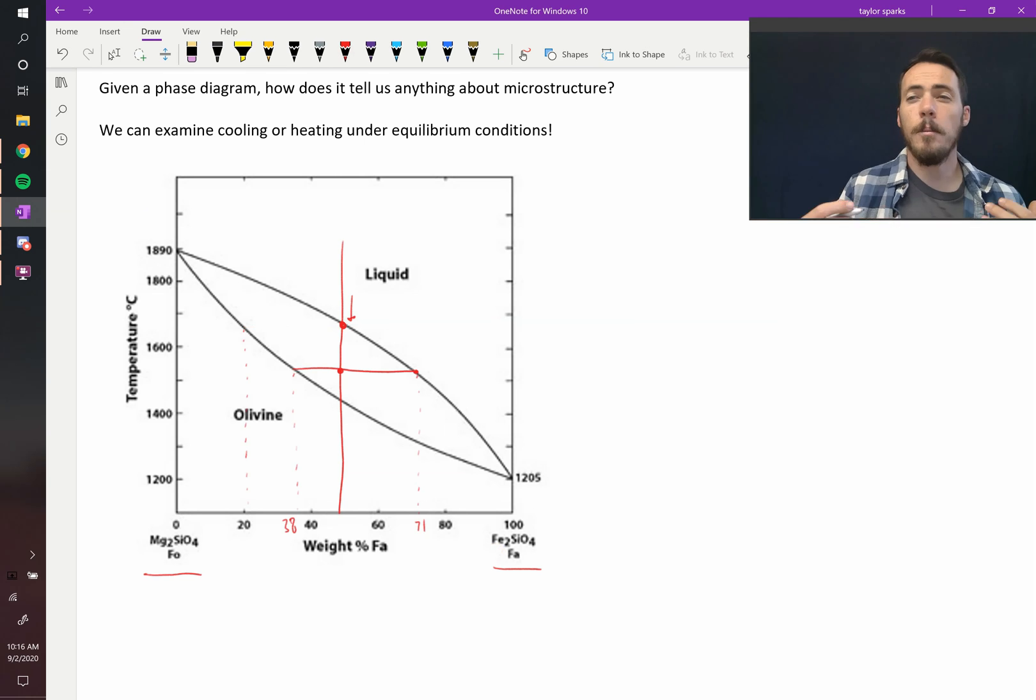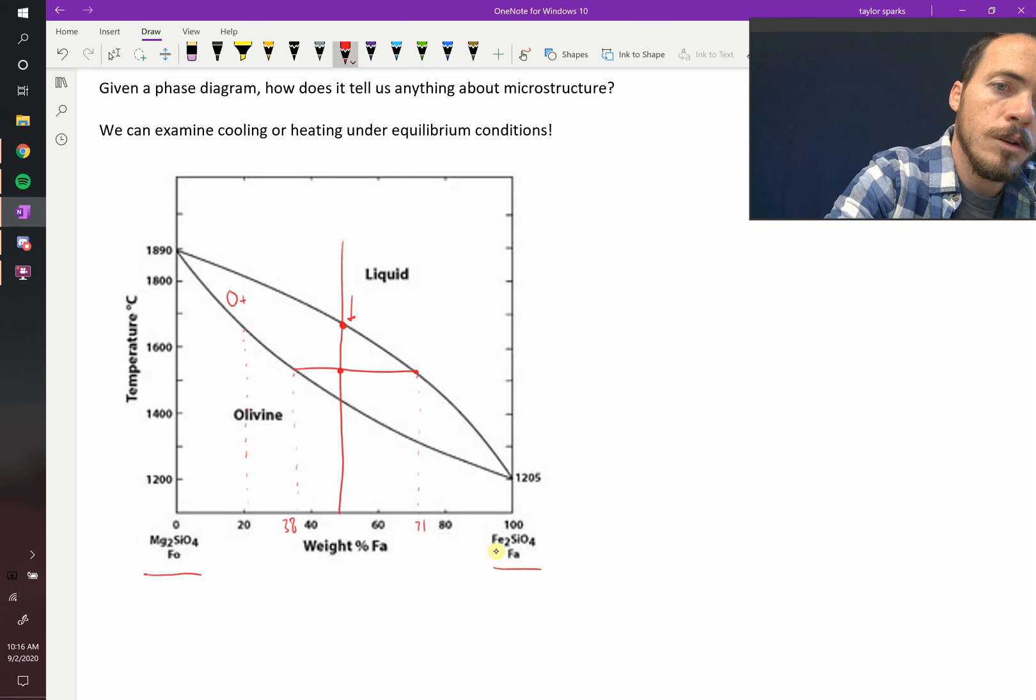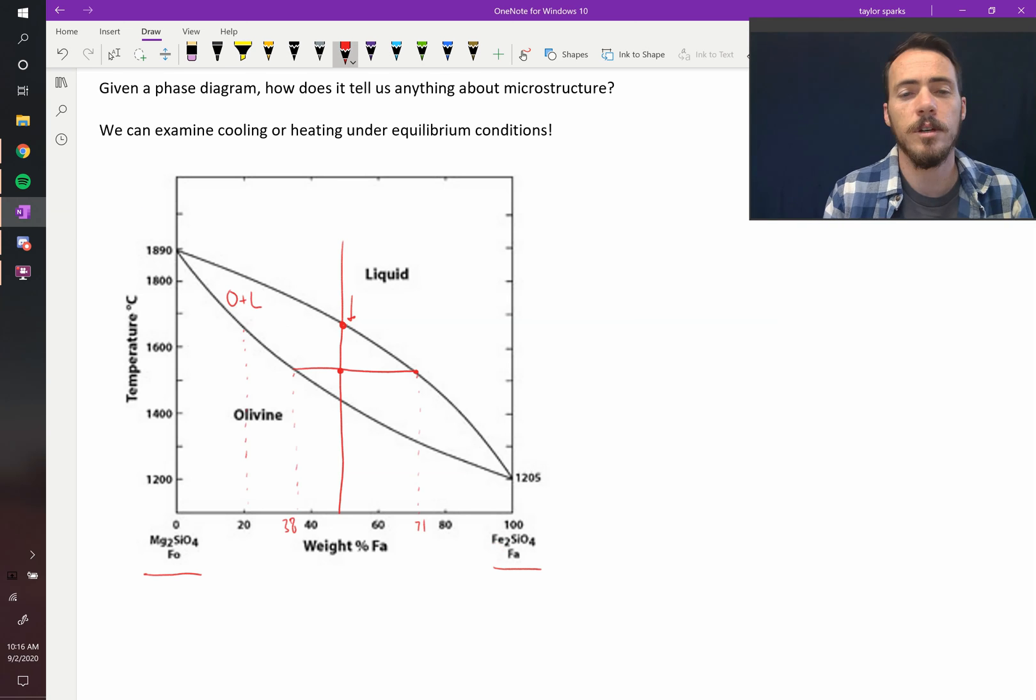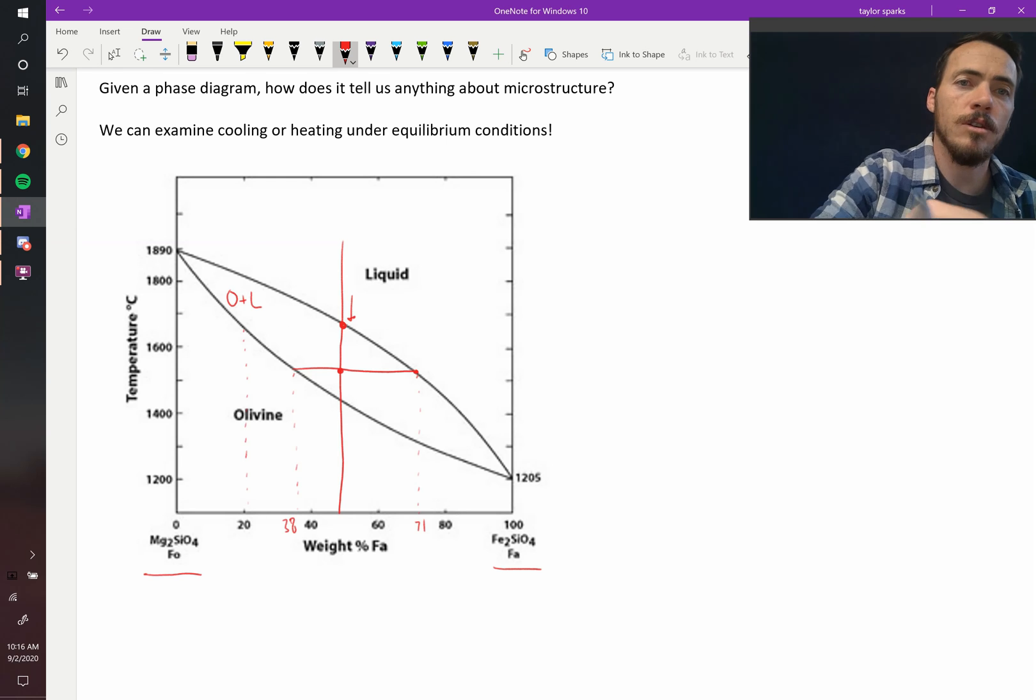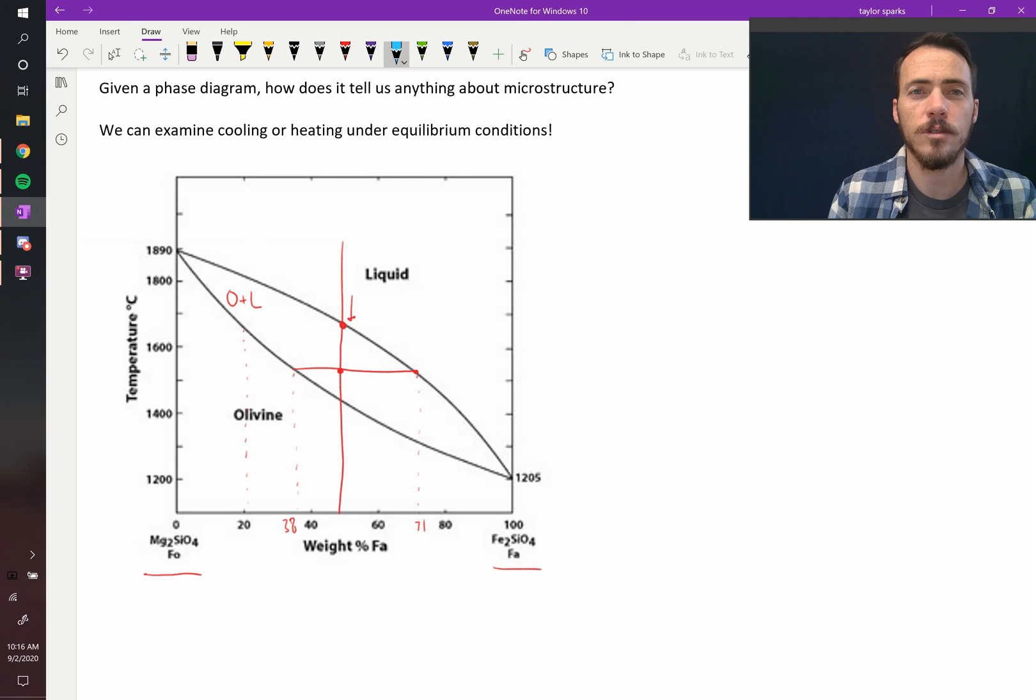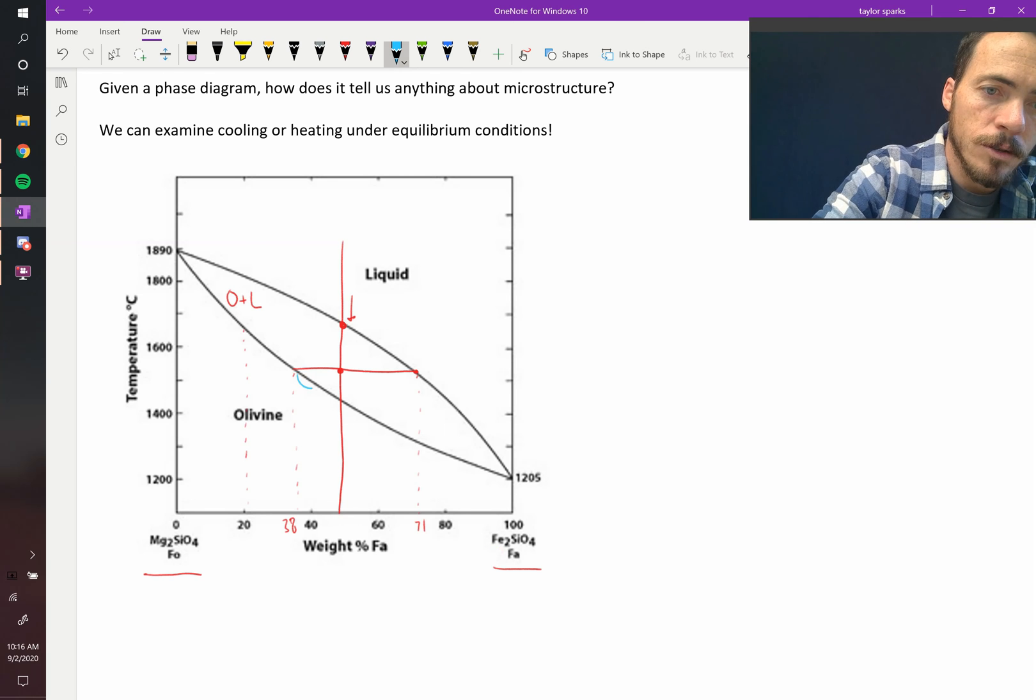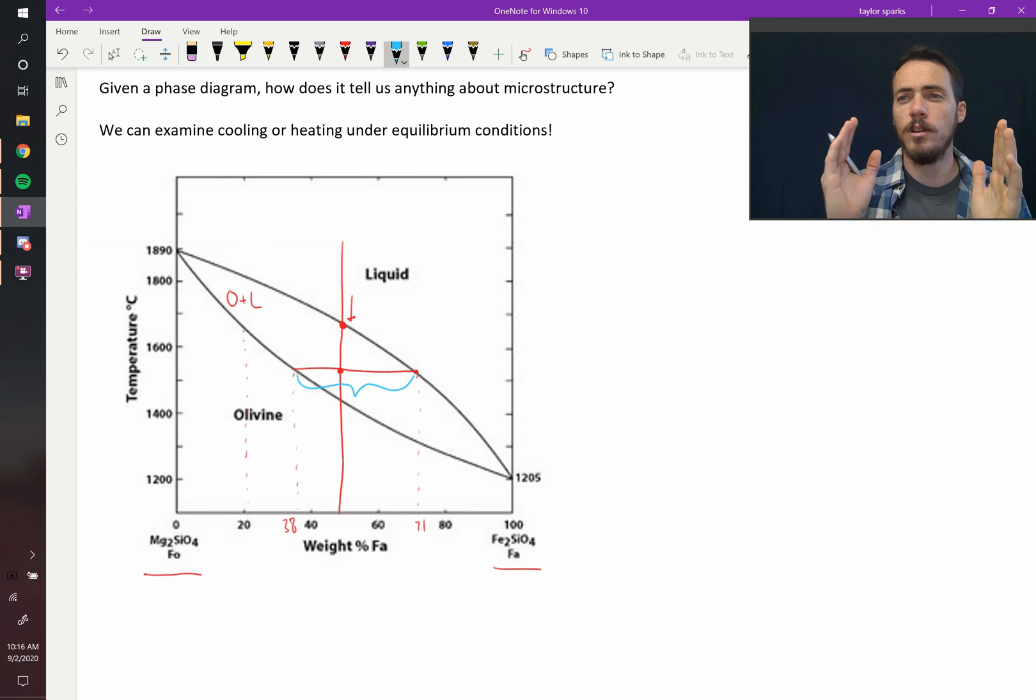The question is, at this temperature, how much liquid and how much olivine do we have? So this is O plus L, olivine plus liquid. How much though? What is the weight fraction? So we can use the lever rule to do this. The lever rule goes as follows. You need to figure out the length of the total line from the two end members. So that's this line right here. So it's this full length of the line. You see that? So all the way from 38 to 71.